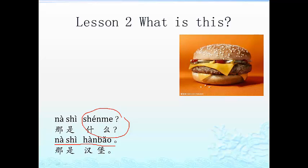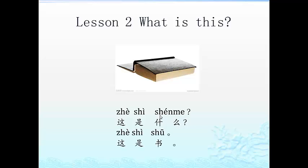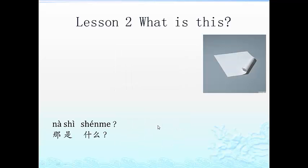那是什么? 那是汉堡. For a yes-or-no question: 那是汉堡吗? 对, 那是汉堡. 这是什么? 这是书. 那是什么? 那是纸 — very good, paper.